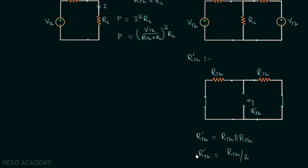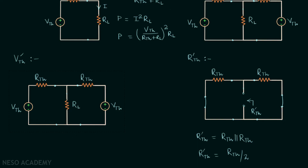Now we calculate the Thevenin's voltage, VTH prime. We open circuit the load resistance; the Thevenin's equivalent voltage is the open circuit voltage. Applying KVL, the current in the circuit is equal to 0 because of the two VTH sources connected in this fashion. Applying KVL in the loop gives VTH prime equal to VTH.